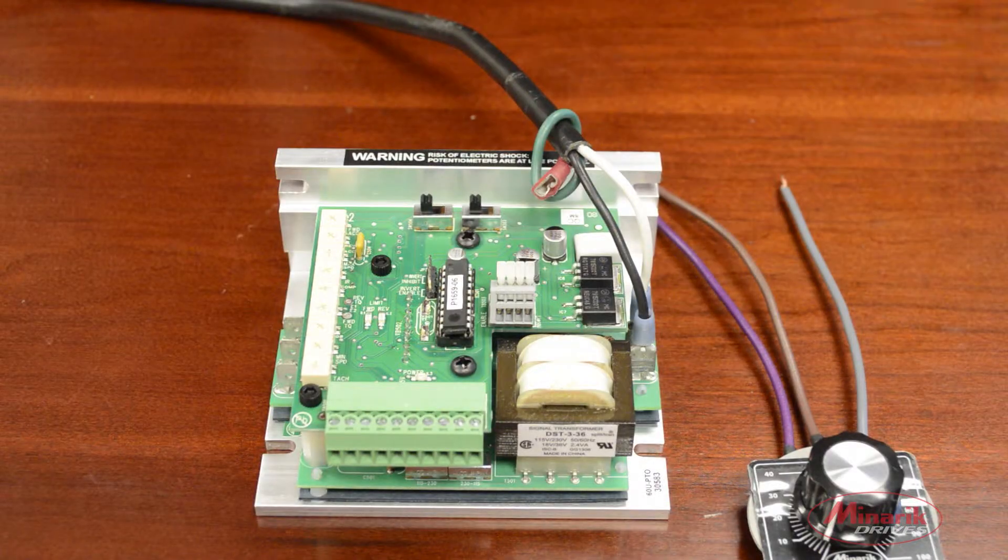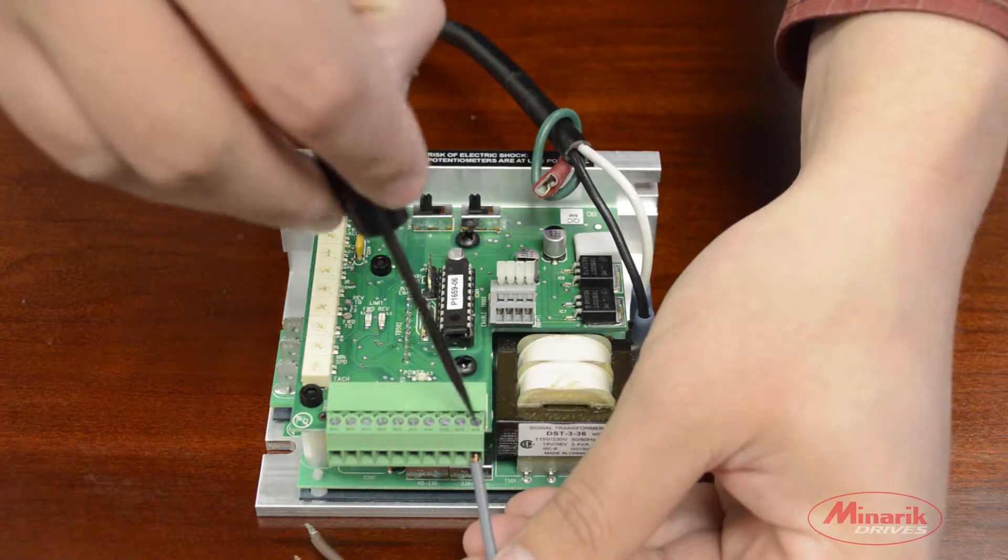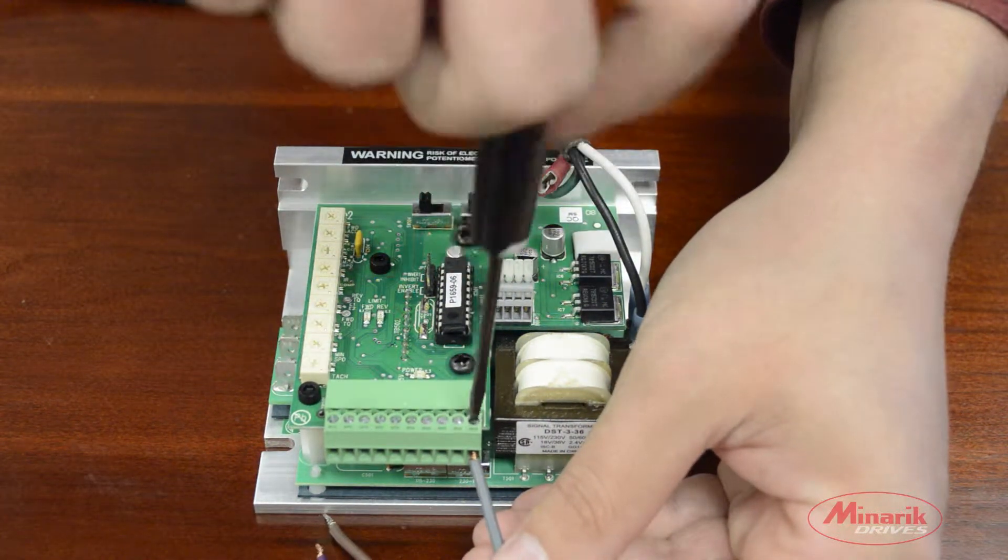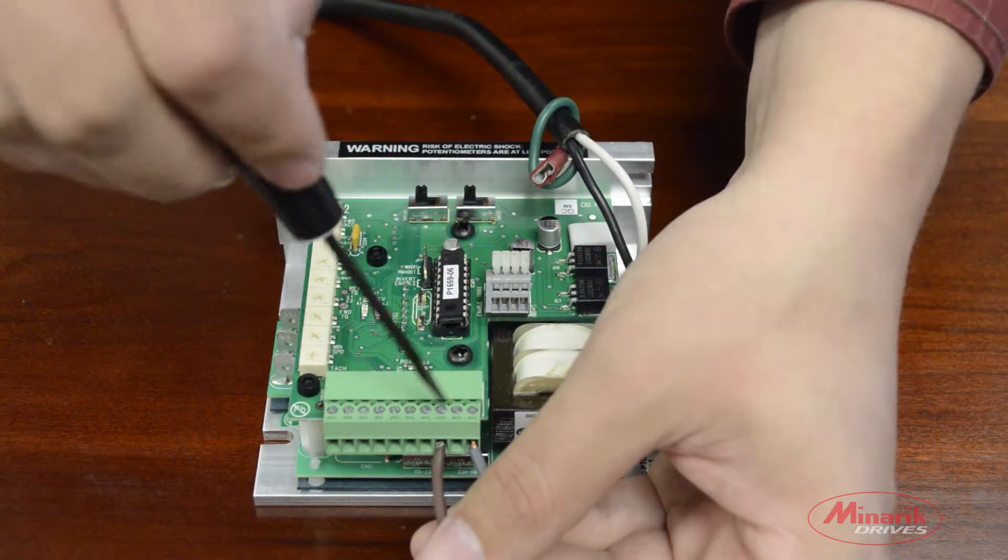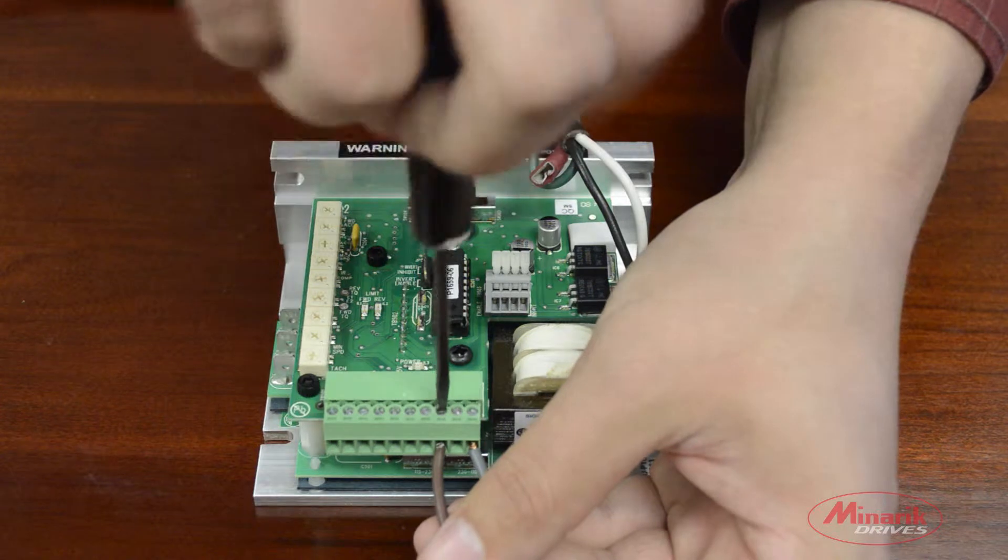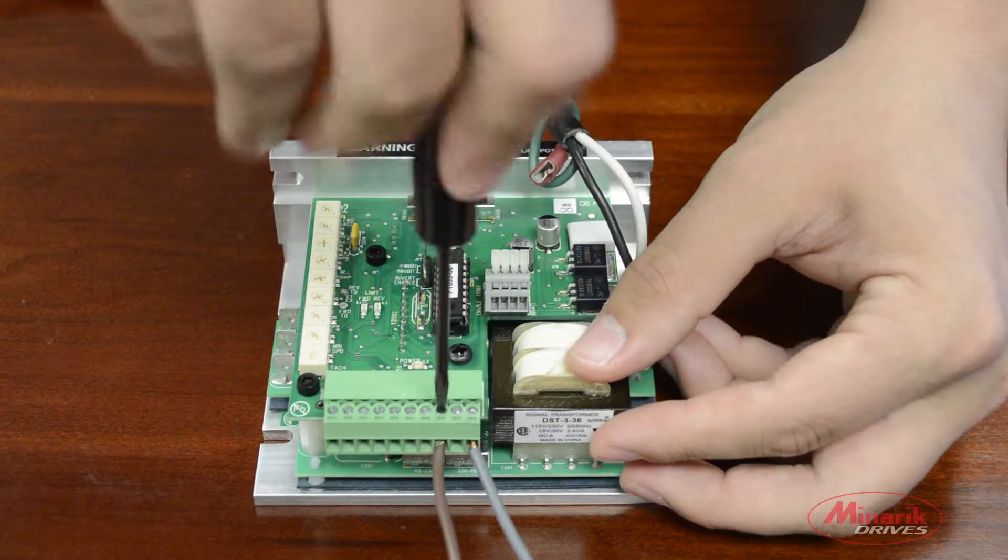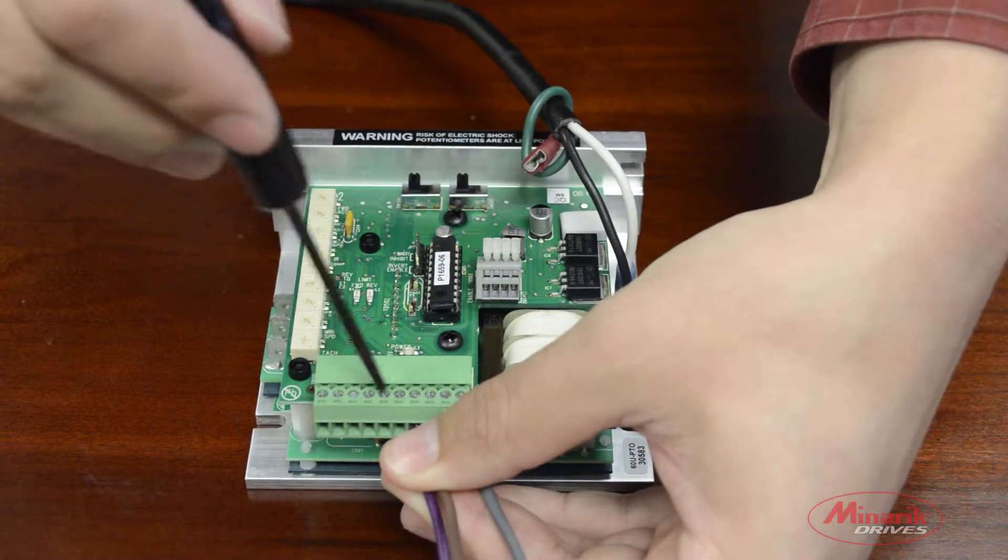Next we'll wire it up for reverse operation control. The common lead goes into S0, the wiper goes into S2, while the positive goes into S3.